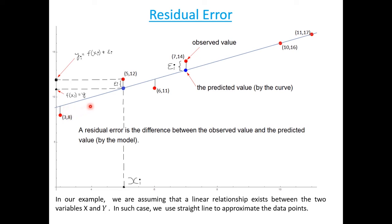As the scatter plot suggests a linear relationship, we use a straight line to represent the data points. Here we can see that the predicted line does not coincide with all the data points. Some points are on the line, some points are above the line, and some others are below the predicted line. The difference between the observed value and the predicted value is called the residual error. Here the residual error is zero — the observed value and the predicted value are the same.